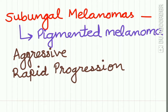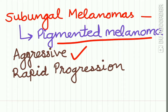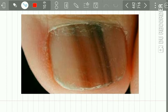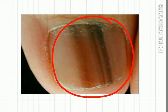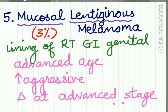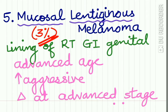Subungual melanoma is a pigmented melanoma which is very aggressive and rapidly progressive. It shows both the radial and vertical growth phases, and you can see pigmentation in the nail bed.